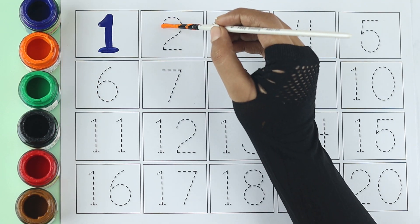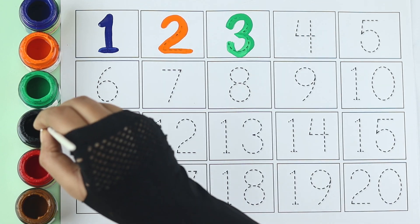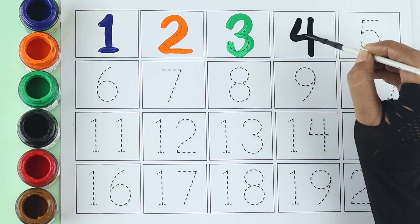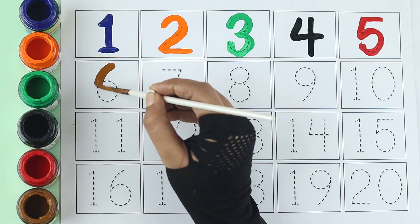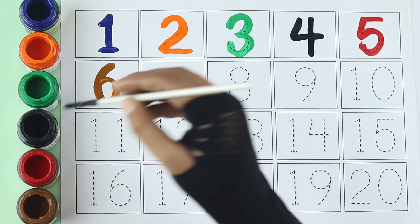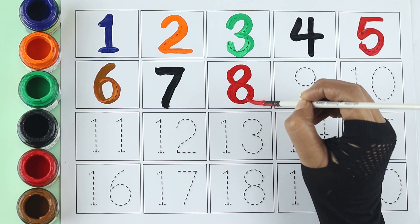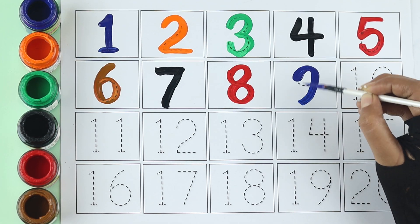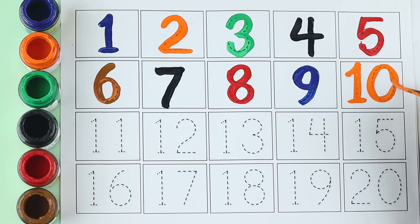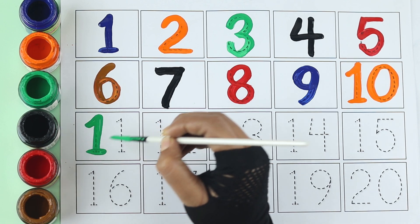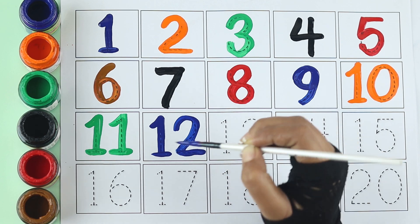Orange color two, green color three, black color four, red color five, brown color six. Black color seven, red color eight, blue color nine, orange color ten, green color eleven, blue color twelve, brown color.